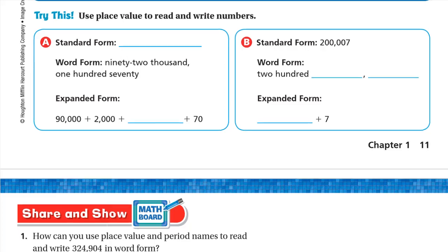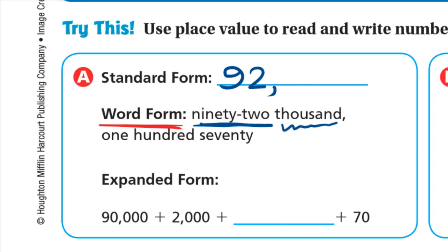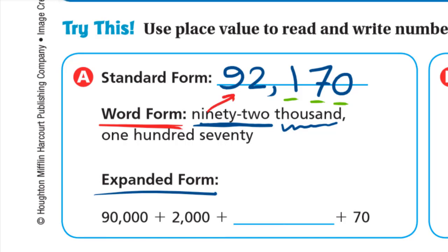Try this: use place value to read and write numbers. We need to write the standard form and complete the expanded form. We have the number in word form: 92,170. When I see 'thousand,' I stop and write 92, put the comma, and then the ones period needs three digits. 170 is three digits, so I write 170. In expanded form: 9 is at ten thousands so it's 90,000; 2 is at thousands so it's 2,000; 1 is at hundreds which is 100; 7 is at tens which is 70.